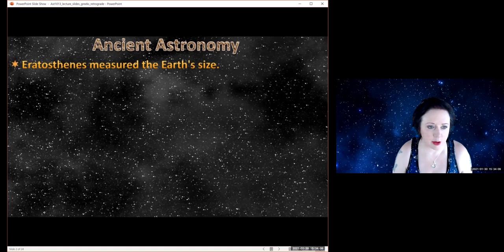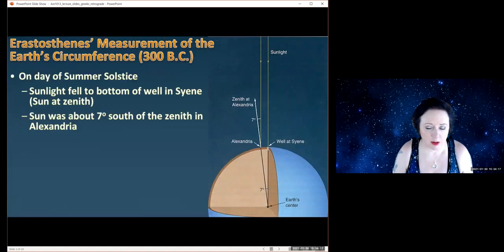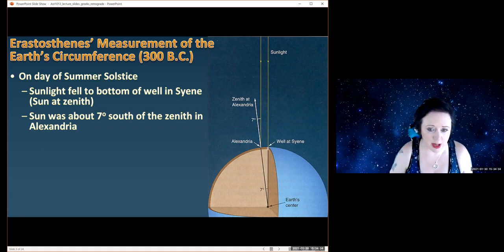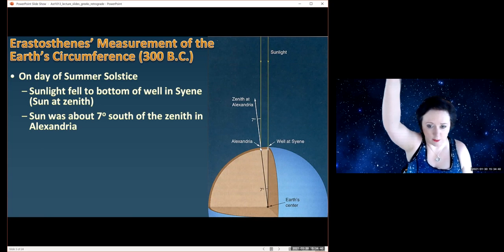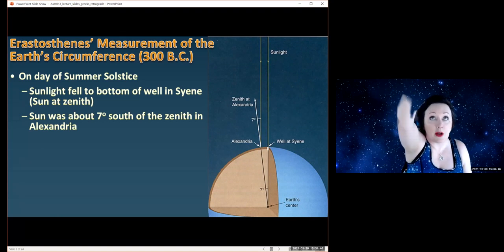I want to start with Eratosthenes. He managed to measure the size of the earth. Here you can see a picture of the earth, and what Eratosthenes noticed was that on the summer solstice, the sunlight at midday hit the bottom of a well in Syene, meaning it's directly at the zenith, directly above your head. But on the same day, on the summer solstice in Alexandria, the sun was not directly above. It was about seven degrees off.